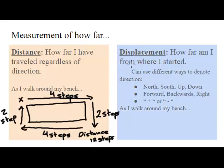To make it a vector, or a displacement, which is very similar to distance, it's how far am I from where I started, because now I'm paying attention to directions. I can use different ways to denote directions: North, South, East, West, up, or down. Or forwards or backwards, right or left. Or positive or negative.